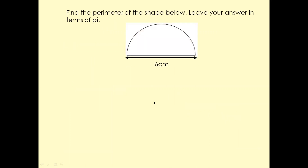Now here is a question for us. Find the perimeter of the shape below and leave your answer in terms of pi. It's very important to read the question carefully — in this case they want us to leave the answer in terms of pi.